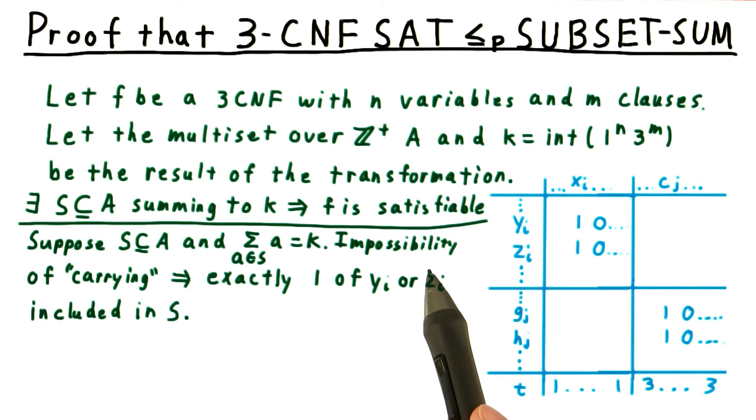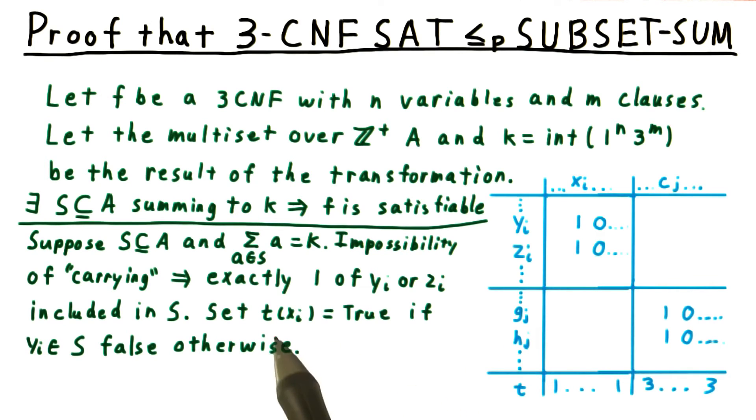Then, the impossibility of carrying the digits in any sum implies that exactly 1 of yi or zi must have been set to true. Therefore, we can define a truth assignment t, where t of xi is true if yi is included and it's false otherwise.